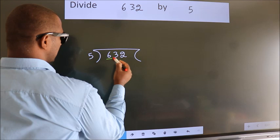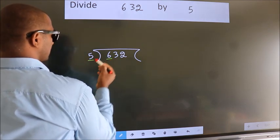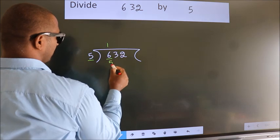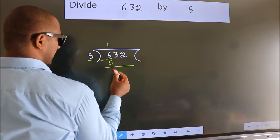Here we have 6, here 5. A number close to 6 in 5 table is 5 once 5. Now we should subtract. We get 1.